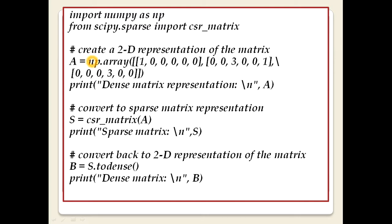We create a 2D representation of the matrix using np.array. The matrix contains values: 1, 0, 0, 0, 0, 0, 0, 0, 3, 0, 0, 1, then 0, 0, 3, 0, 0, 0. We print this dense matrix representation, then convert it to sparse matrix representation using CSR matrix and print the sparse form.